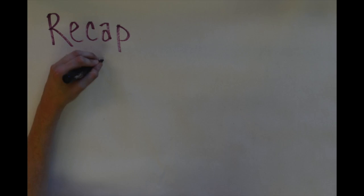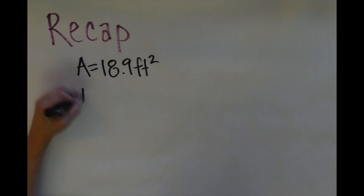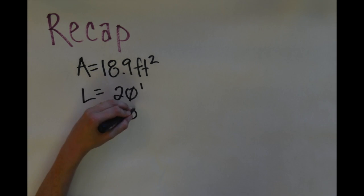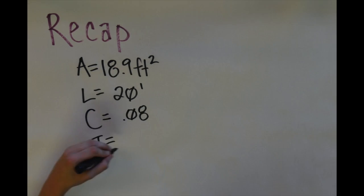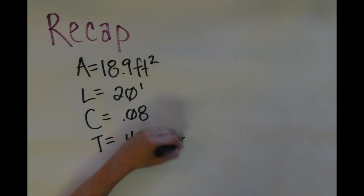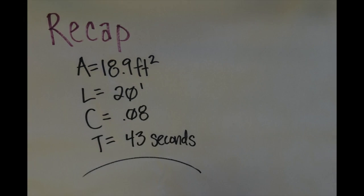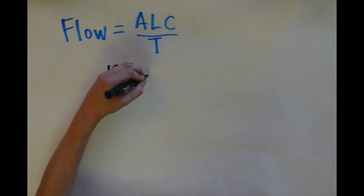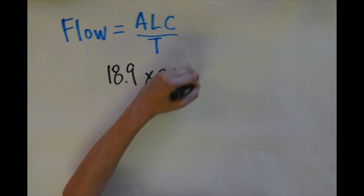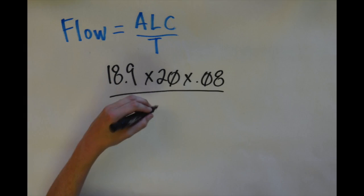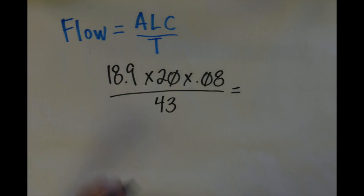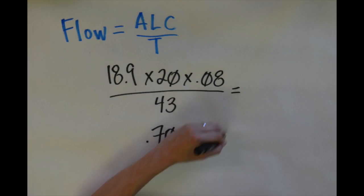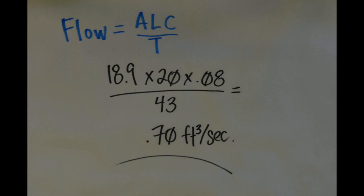To do a quick recap: A is 18.9, L is 20, C is .08, and T is 43. Now we're going to calculate flow, which is the average cross-sectional area times the length times the coefficient, divided by the time. That ends up giving us an average stream flow of .7 feet cubed per second.